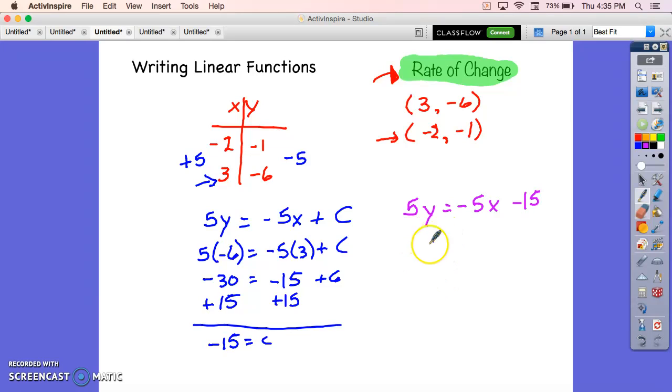The first thing I could do is I could get this guy to standard form real quickly. I can add 5x to each side and get 5x plus 5y equals negative 15. And your teacher may say, oh, hey, we could divide everything by 5. But that's a perfectly acceptable function right there.